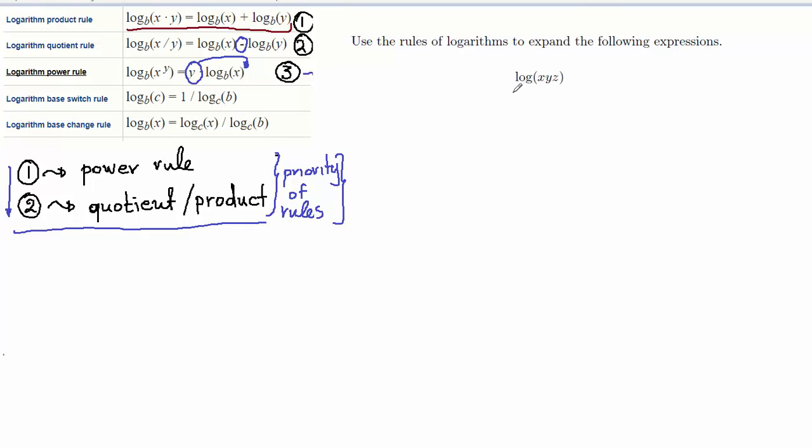Meaning, in order to rewrite these as a sum and a difference of logarithms. What I have are three different arguments, three different variables here, the product of x, y and z.